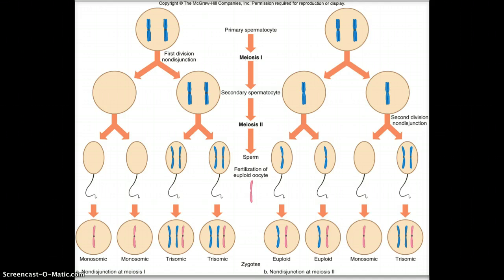And non-disjunction is when the chromosomes fail to separate correctly in either anaphase during either anaphase I in meiosis I or anaphase II in meiosis II. And so, what this produces is either an egg or a sperm that has two copies of a chromosome or none rather than the correct normal one copy. And so, what happens is then that egg or sperm when it fuses during fertilization, the resulting embryo has the wrong number of chromosomes.